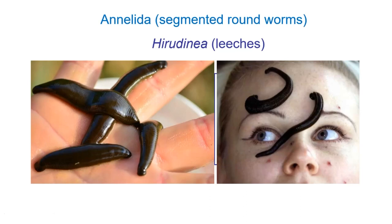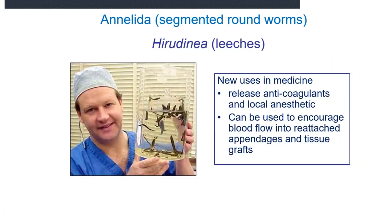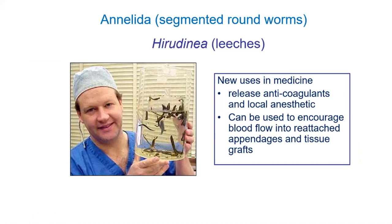Leeches are not really something we're too concerned about medically. You peel the leech off and that's kind of the end of it, other than people being grossed out. They are more or less parasite-sized animals — you find them on fish, and you might find them on yourself if swimming where leeches are found. Leeches have been used in medicine for hundreds of years, and they're actually still used in medicine today. People who have a finger reattached or cut off — clinics use leeches to help blood flow because leeches have anticoagulants. Leeches have never actually left medicine, despite how gross they are.